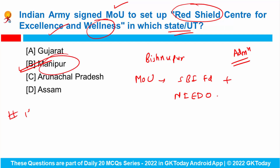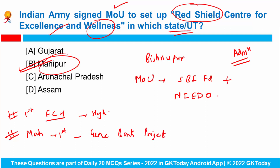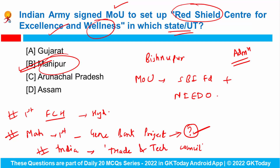India's first Flow Chemistry Hub has been set up in Hyderabad recently. Maharashtra is the first state in India to set up a Gene Bank project. India has also agreed to set up a Trade and Technology Council along with the European Union. Also, UWA Tourism Clubs are to be set up by the Central Board of Secondary Education, that is CBSE.